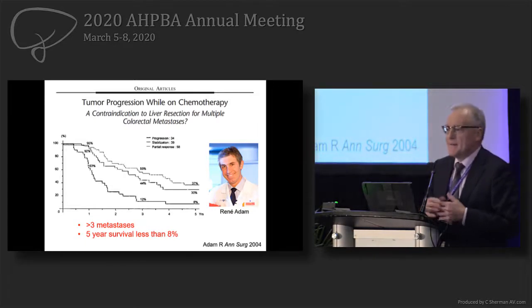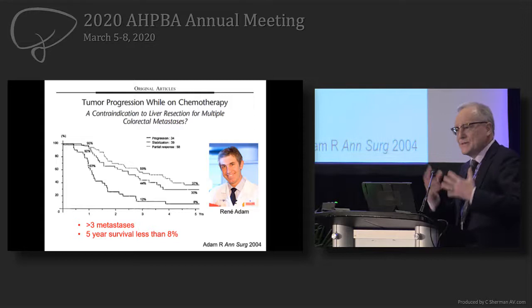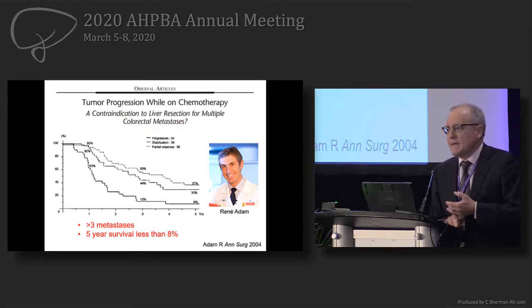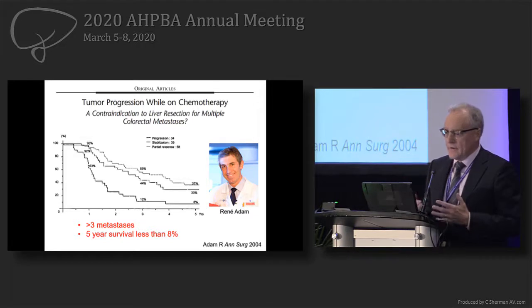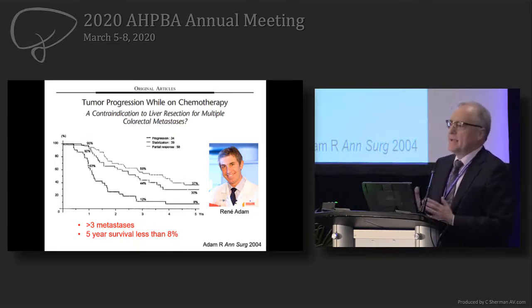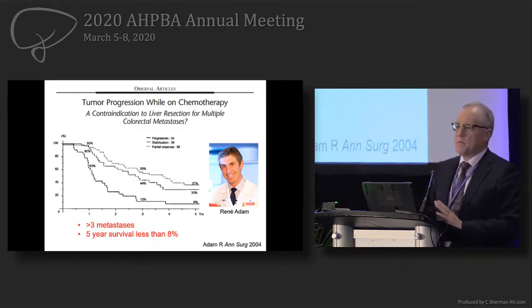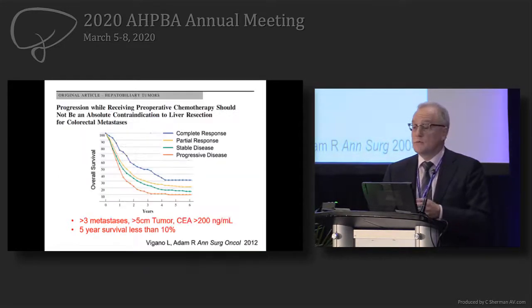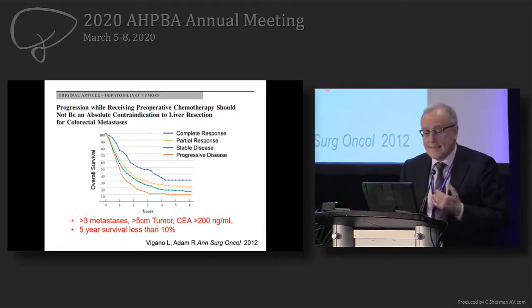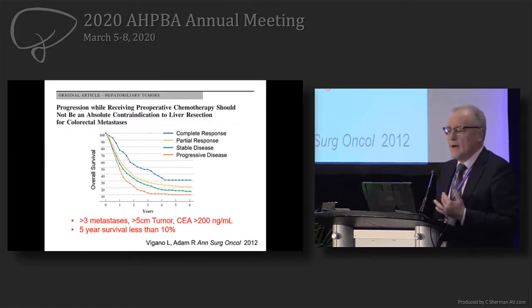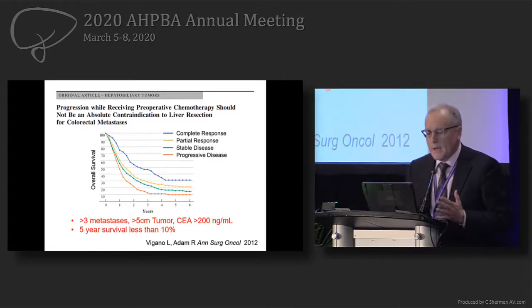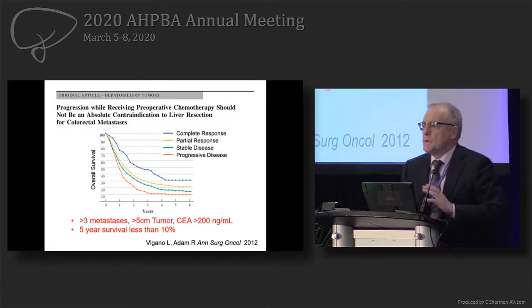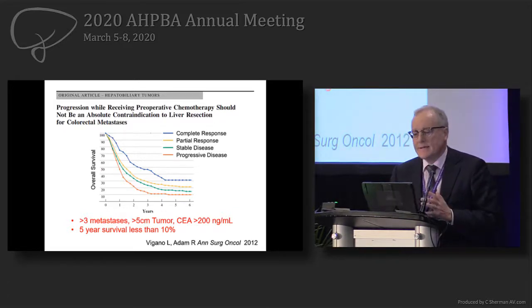Can we personalize the prognosis? René Adam is trying to define which patients we should resect if they have no response to chemotherapy — quite common after second or third line. He said if you have more than three metastases, five-year survival is 8%, probably not worth operating. That was 2004. He came back in 2012 and told us that three metastases is not enough; add greater than five centimeter tumor and CA greater than 200 — you shouldn't resect. So now we are really proposing resection for everybody with lack of response.